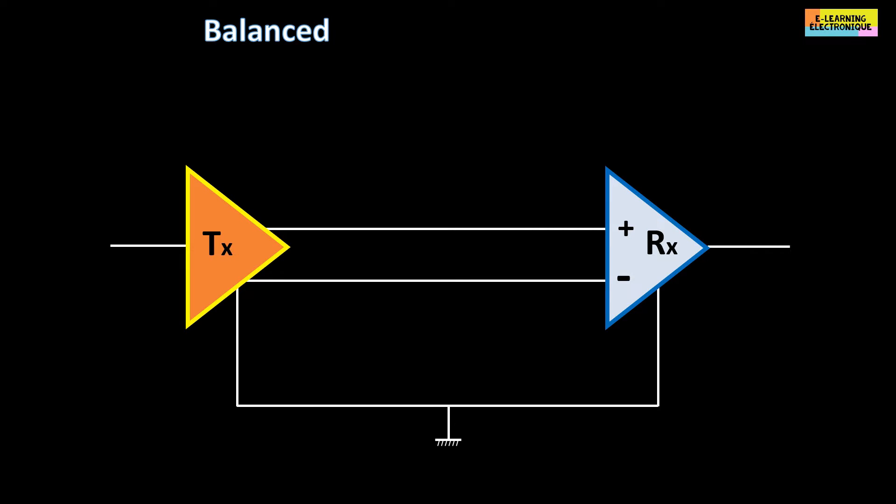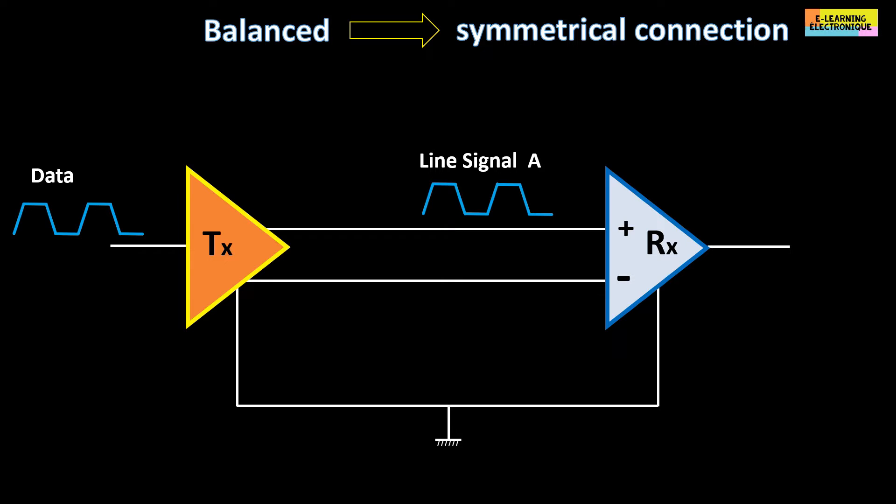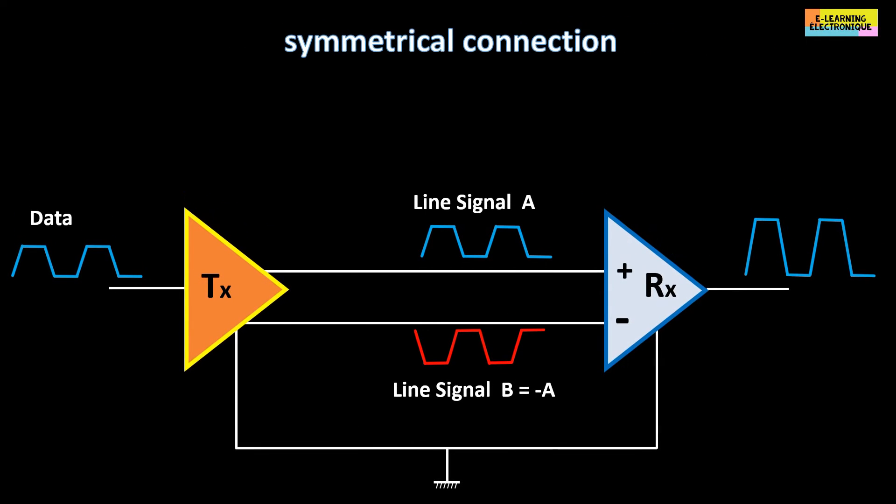In this connection mode, the electrical signal is transported at the same time on two wires that are physically close to each other. Each wire receives the same electrical signal but on one it is in phase opposition. There may be a third ground wire but it is not mandatory and it will serve as a shield. These symmetrical links have the advantage of being protected against external disturbances.